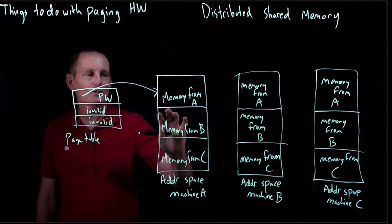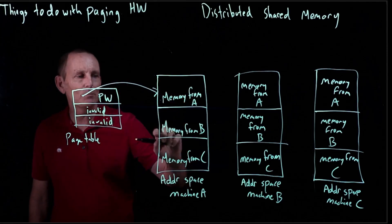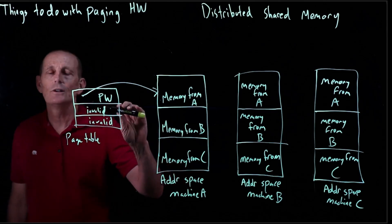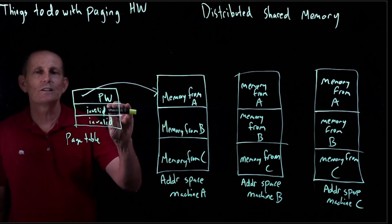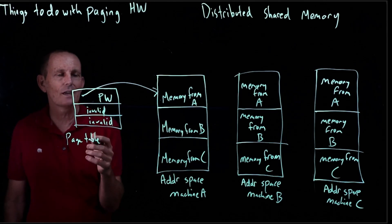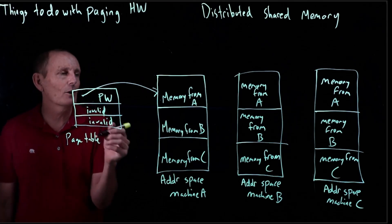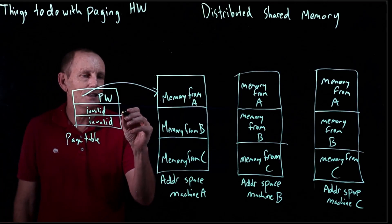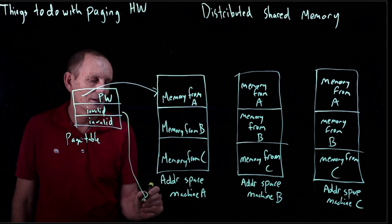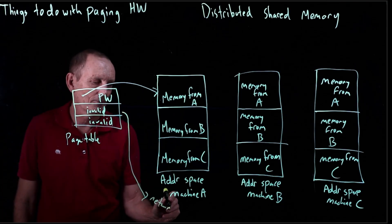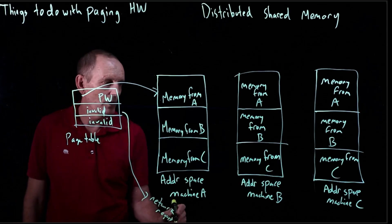But if it tries to read or write to the B portion of the address space, it's invalid. So this would go in the kernel to the page fault handler. The page fault handler would look and would say, oh I happen to know this page actually is located on B. I'm going to go ahead and send a network request for this data.